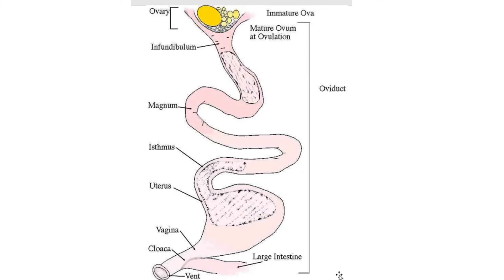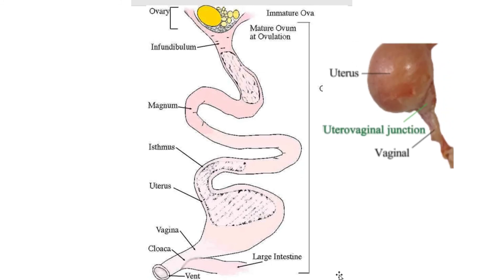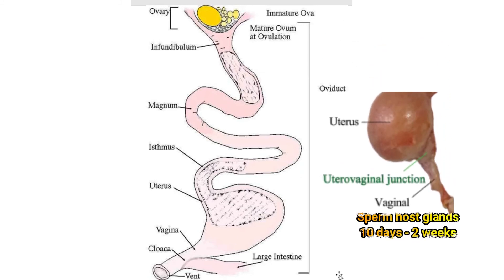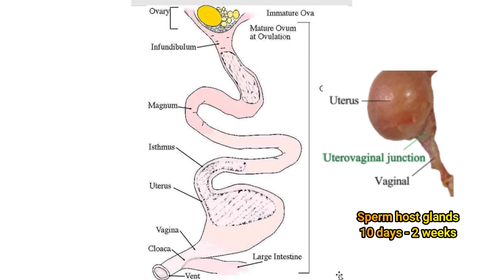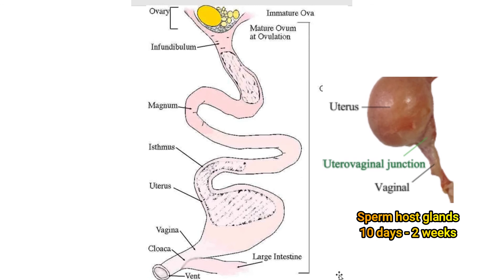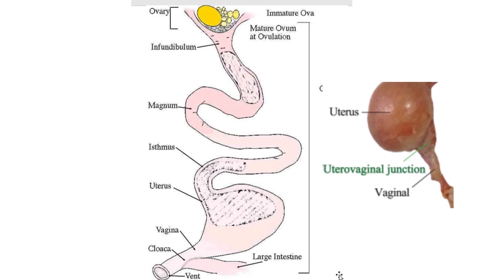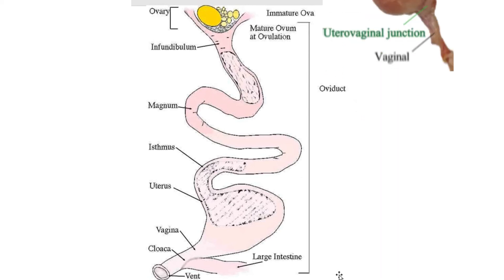Near the junction of the shell gland and the vagina are deep glands known as sperm host glands that can store sperm for long periods of time, typically 10 days to 2 weeks. When a hen lays an egg, sperm can be squeezed out of these glands into the oviduct and then can migrate to the infundibulum to fertilize an ovum.